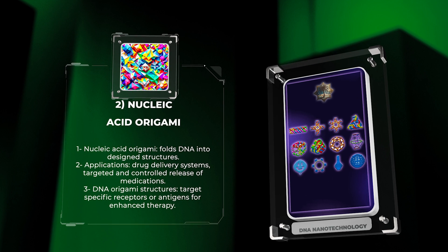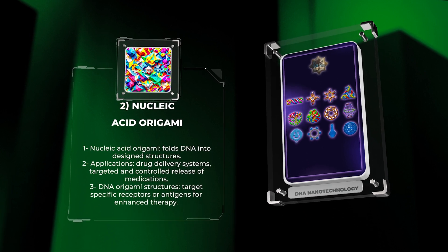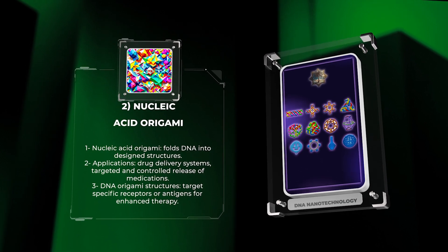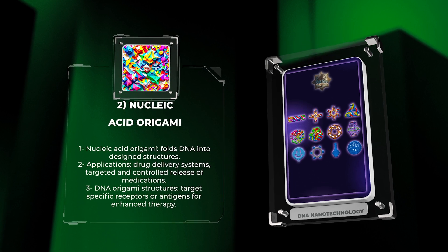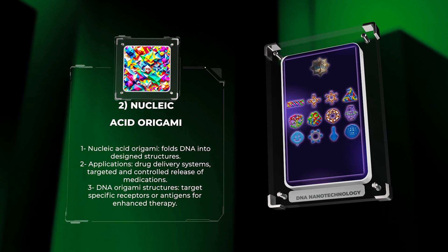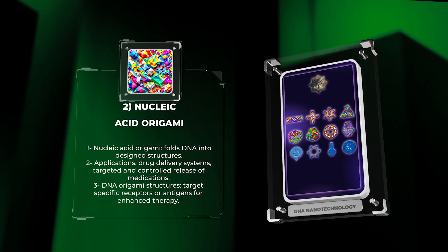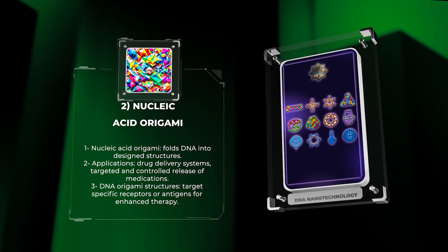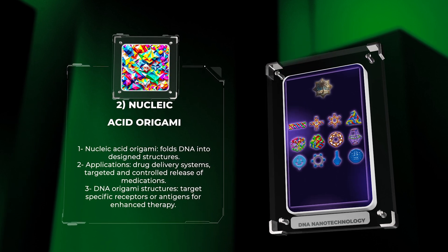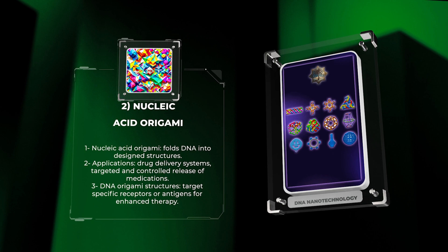One of the significant applications of nucleic acid origami is in the development of drug delivery systems. By incorporating specific drug molecules within the DNA nanostructures, we can achieve targeted and controlled release of medications to specific tissues or cells, minimizing side effects and improving treatment outcomes.